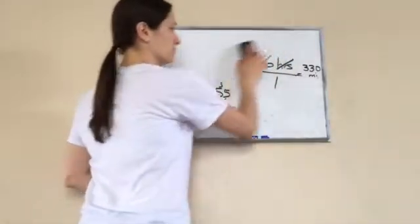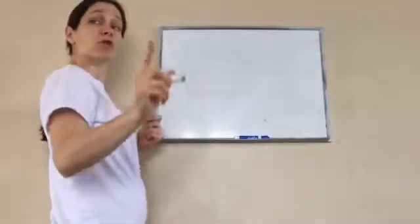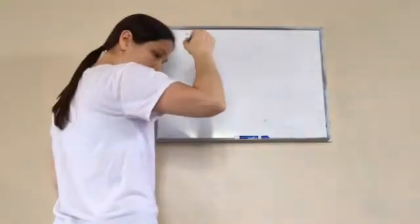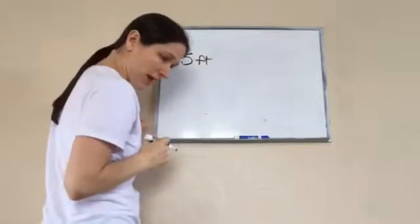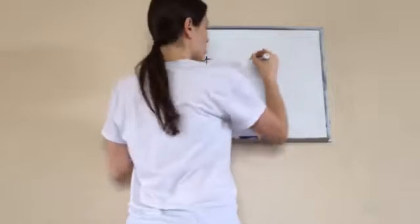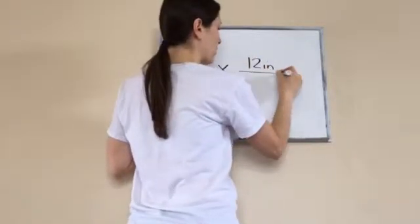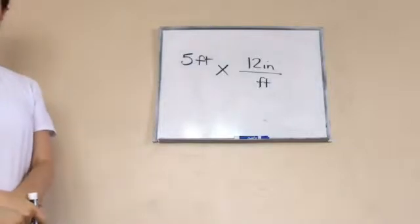All right. Do this one on your own, and we'll go over it on the board. It says multiply five feet. They told me to multiply that by 12 inches per foot.